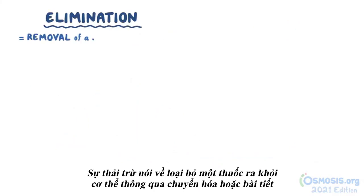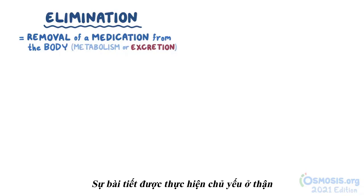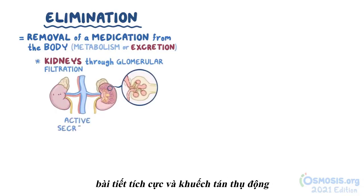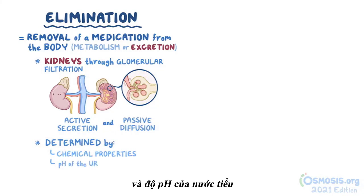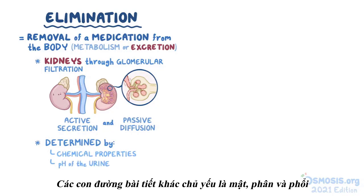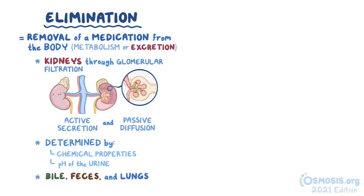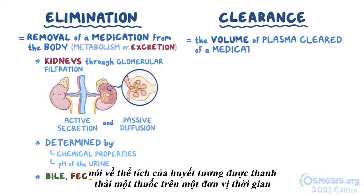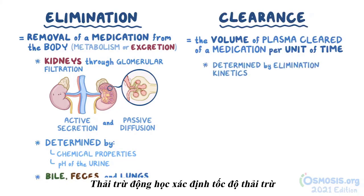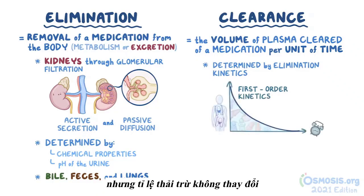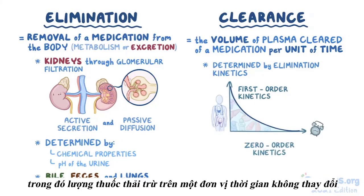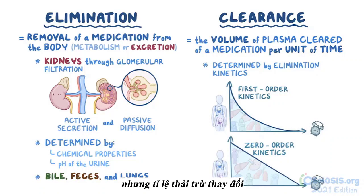As a quick recap: elimination refers to the removal of a medication from the body either through metabolism or excretion. Excretion is done primarily by the kidneys through glomerular filtration, active secretion, and passive diffusion, and is determined by the chemical properties of the medication and the pH of the urine. Other routes of excretion include mainly the bile, feces, and lungs. Clearance refers to the volume of plasma cleared of a medication per unit of time. Elimination kinetics determines the rate of elimination and includes first-order kinetics, where the amount eliminated per unit of time changes but the fraction stays the same, and zero-order kinetics, where the amount eliminated per unit of time stays the same but the fraction changes.